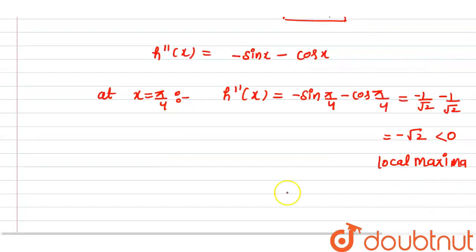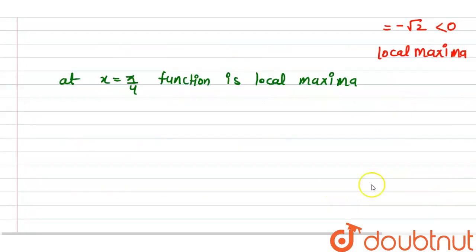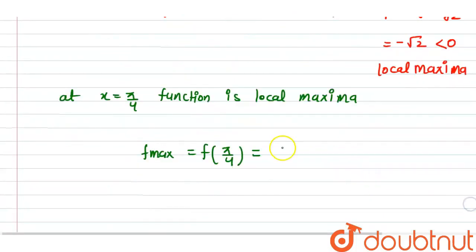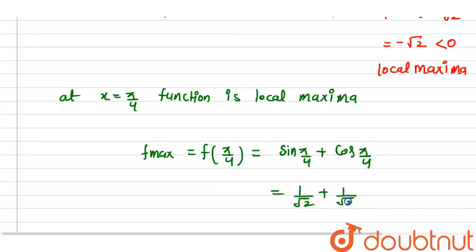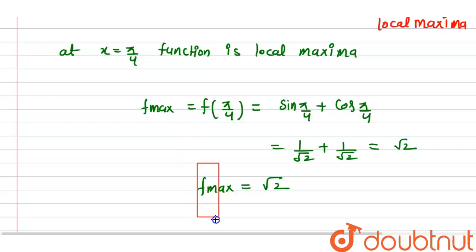Since h double dash x is less than 0, it is a local maximum. So at x equal to pi by 4, the function has a local maxima. The maximum value f max is equal to h of pi by 4, which is sin pi by 4 plus cos pi by 4, equal to 1 by root 2 plus 1 by root 2, equal to 2 by root 2, which is root 2. So the maximum value is root 2. This is our answer.